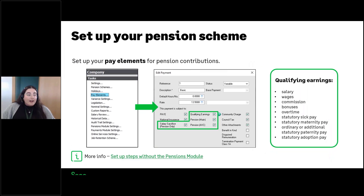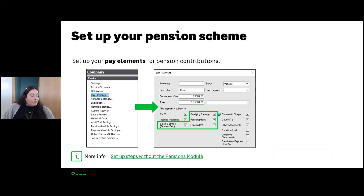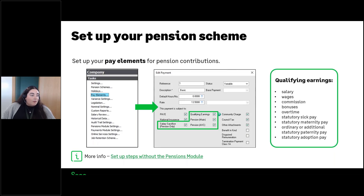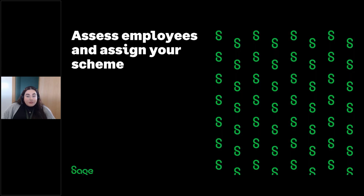Back to the slides for a quick recap before we move on: you're going to set up your pension scheme according to the information from your pension provider, and check the pay elements to determine whether they're going to be included in qualifying earnings or towards your pension calculations. The next section is going to be all about assessing your employees and assigning your pension scheme.